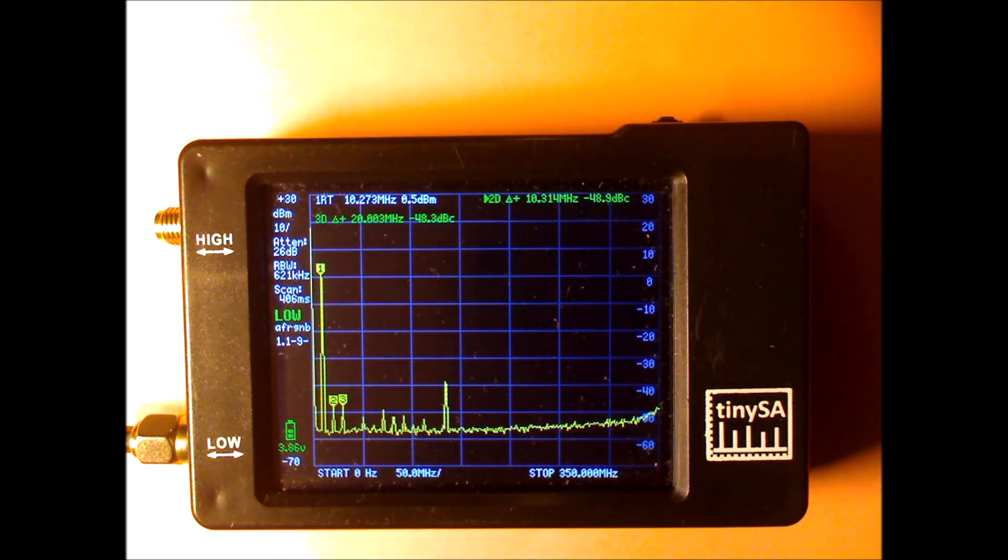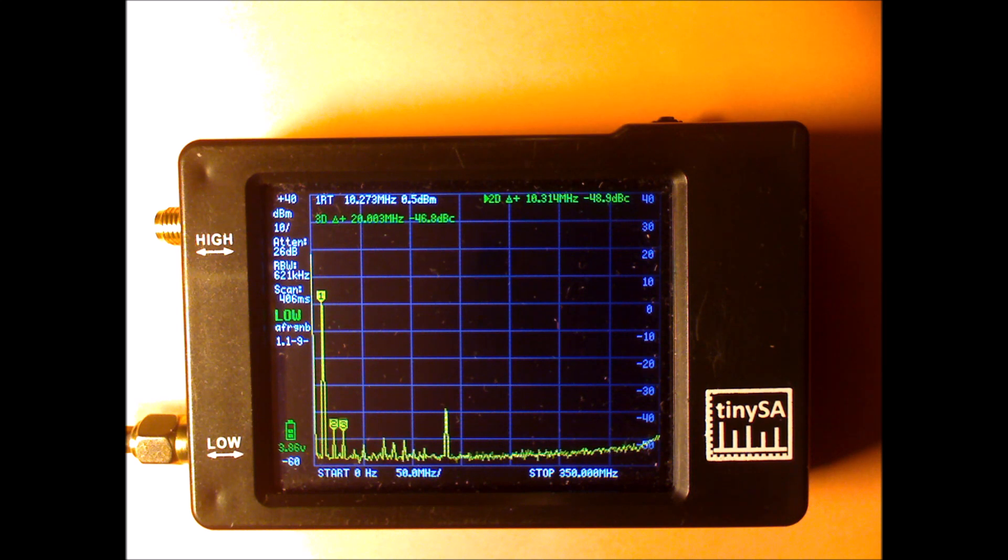because why should two different signal generators have an unwanted output at the same frequency? And the answer is very simple. This 130 MHz is not coming from either of the two signal generators, but is coming from a fourth signal generator,